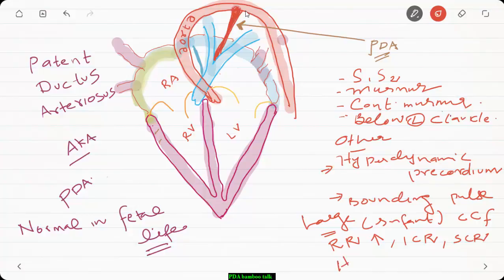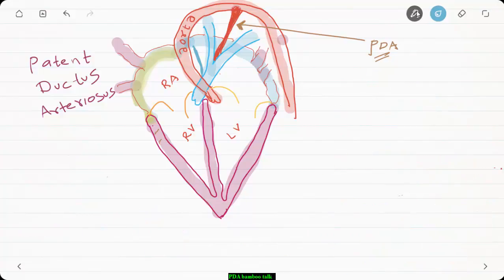You also can have hepatomegaly. What do you think the saturations are going to be? This is a left to right shunt so oxygenated blood is going into the deoxygenated side, so the saturations will be normal.